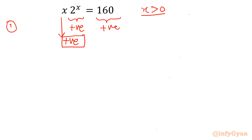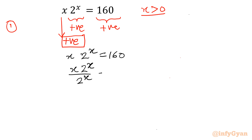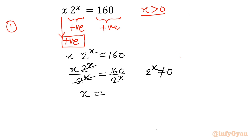Let me write our equation: x times 2 raised to the power x equals 160. Now divide both sides by 2 raised to the power x. So I will write x times 2 to the power x over 2 to the power x equals 160 divided by 2 to the power x. Since 2 to the power x is non-zero, we can divide. The 2 to the power x terms cancel, leaving x on the left and 160 times 2 raised to the power minus x on the right.